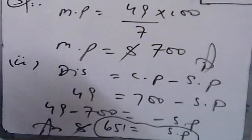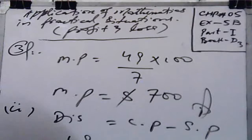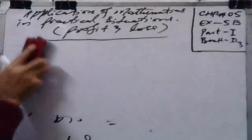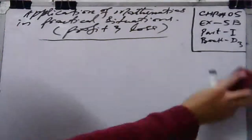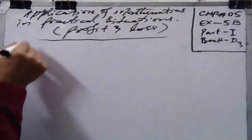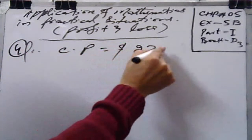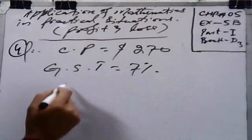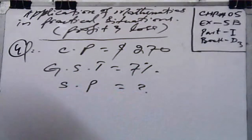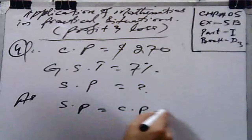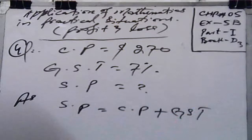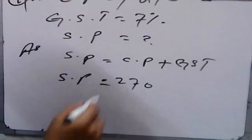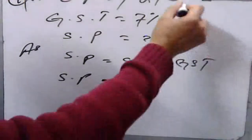Question number four: a microwave oven costs $270 and the General Sales Tax (GST) is 7%. We have to find the sale price. The formula is: Sale Price = Cost Price + GST. Cost price is $270 but we don't have the GST value yet, so we need to calculate it.